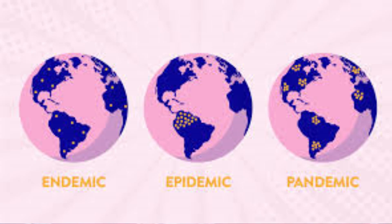In short, here is the specification of these terms: 1. Endemic — a disease that exists permanently in a particular region or population, like malaria is a constant worry in parts of Africa. 2. Epidemic — an outbreak of disease that attacks many people at about the same time and may spread through one or several communities. 3. Pandemic — when an epidemic spreads throughout the world.